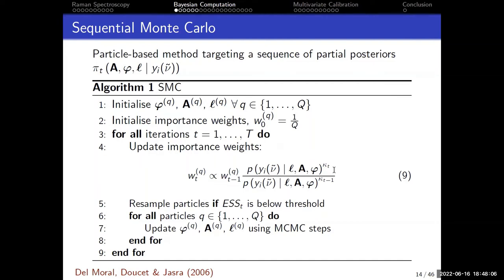Sequential Monte Carlo, a popular algorithm in signal processing, works as follows. The specific type I'm using is likelihood-tempering SMC, introduced by Pierre Del Moral and colleagues. At time zero we initialize particles - really just our parameter samples - by sampling all parameters from those priors. The importance sampling weights are initialized equally at one over the number of particles.